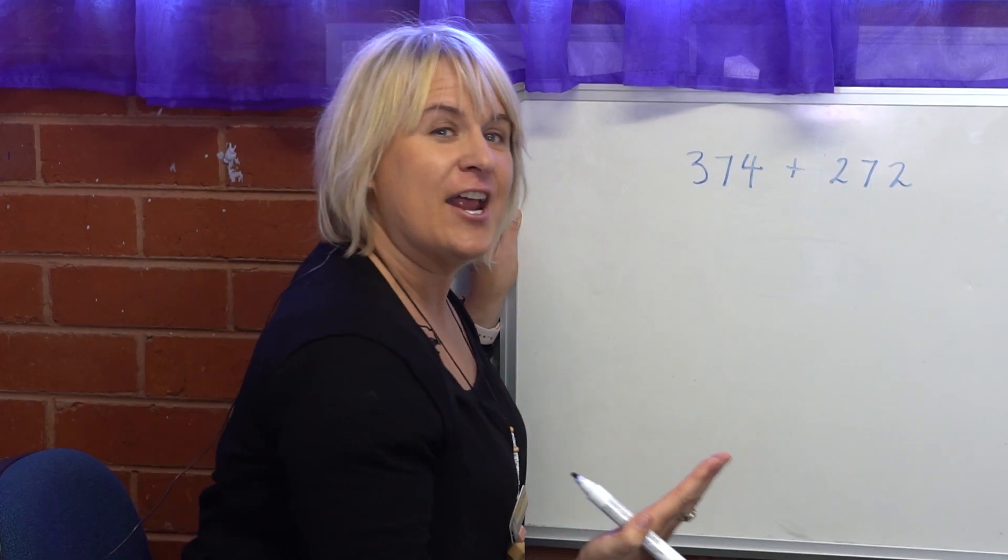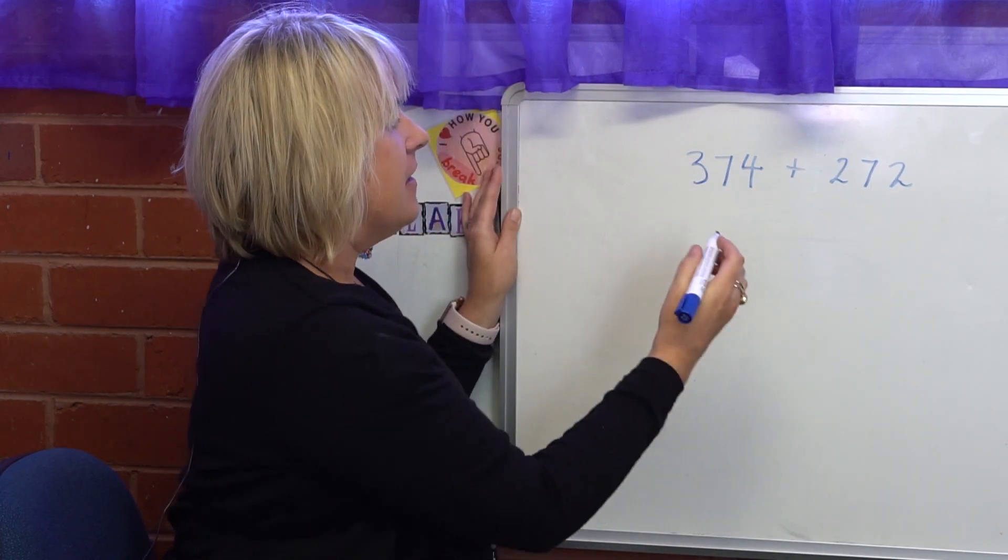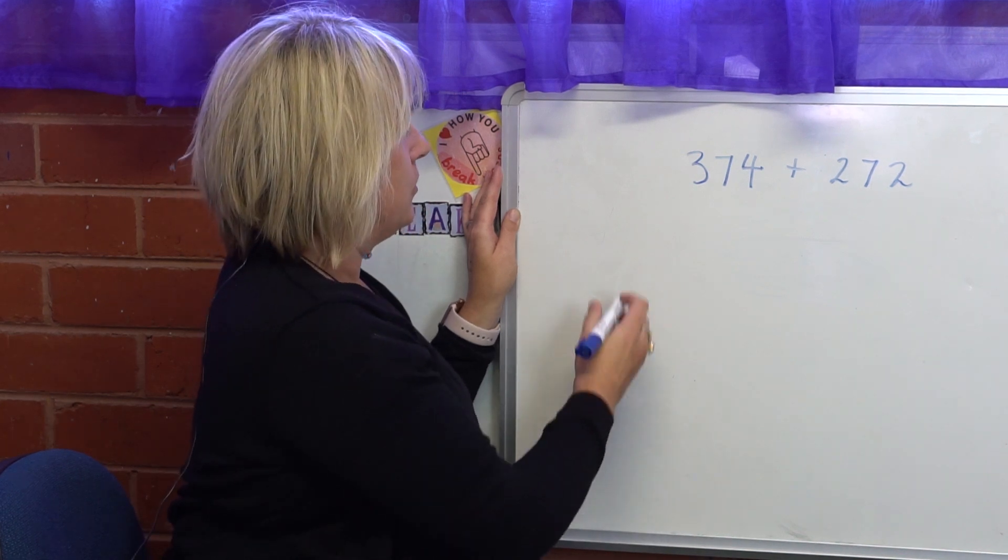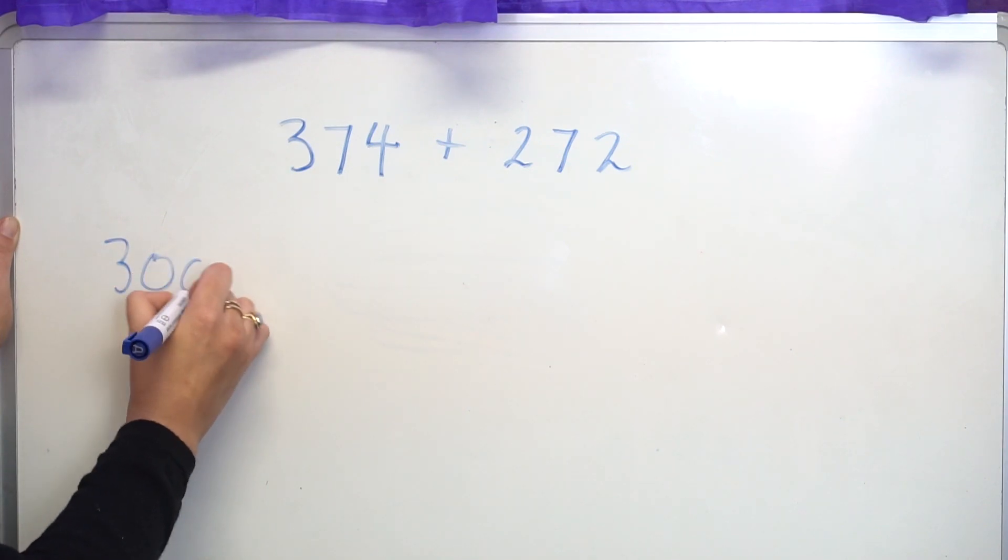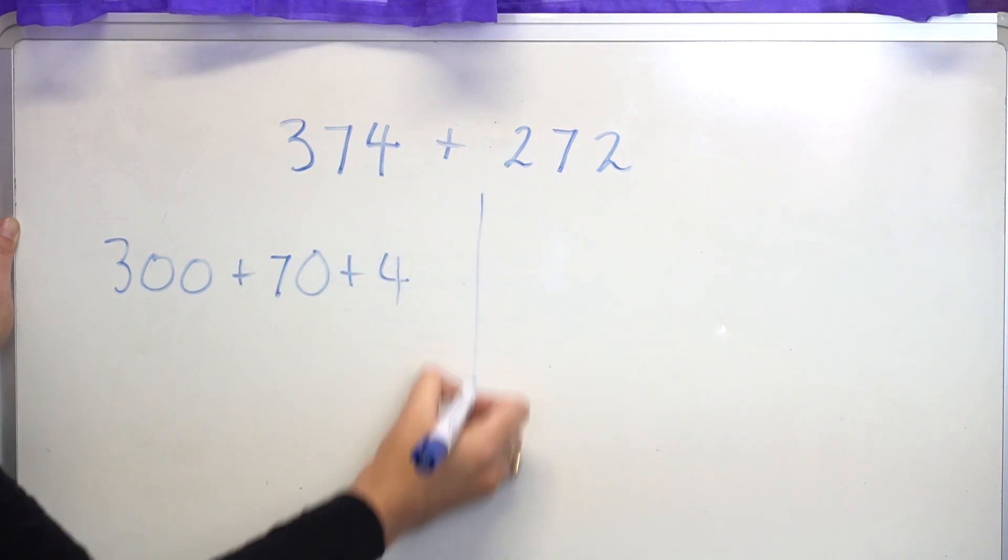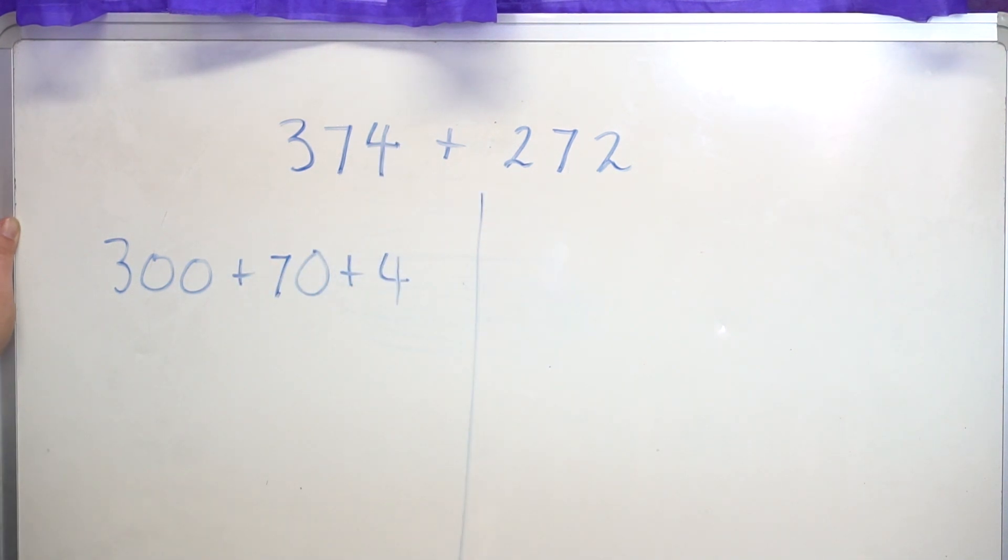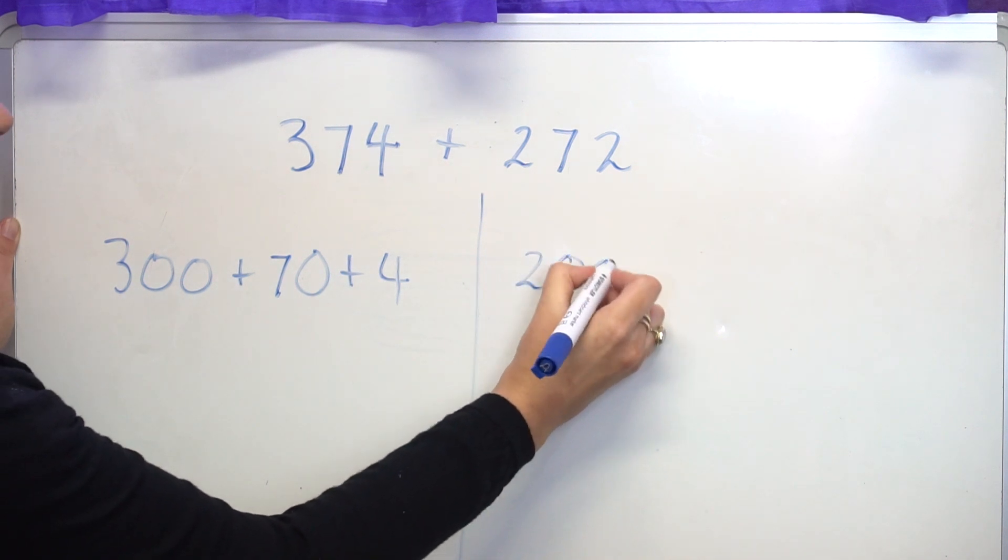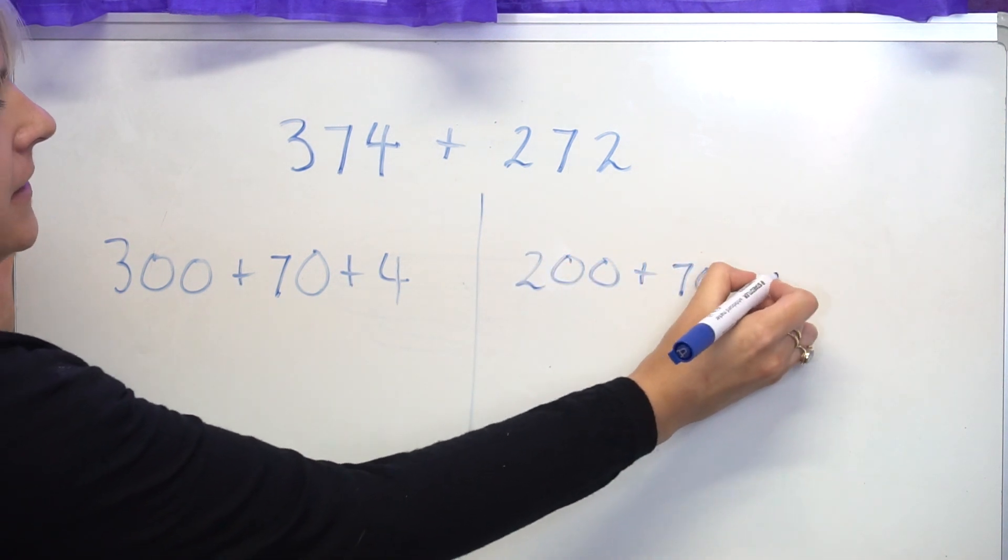I want to look at these numbers in terms of their place value holders. So I want to look at this number 374 and I want to show it as 300 plus 70 plus 4, and I want to look at this number as 200 plus 70 plus 2.